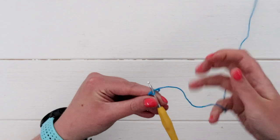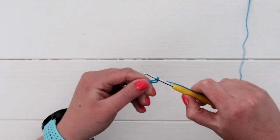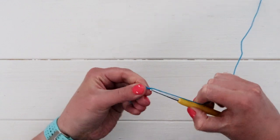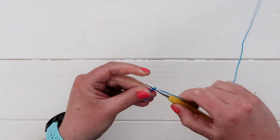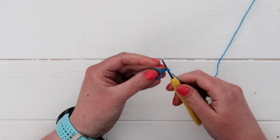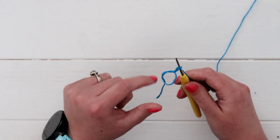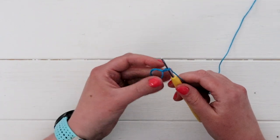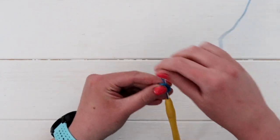From there, we'll just chain two, and this will count as our first double crochet. And we are going to crochet 15 double crochets into our ring. So counting that starting chain, you'll end up with 16 stitches in the ring.